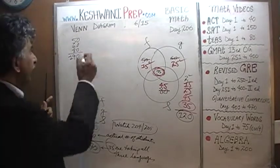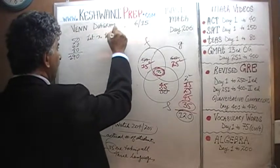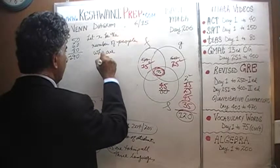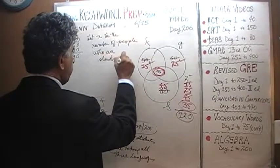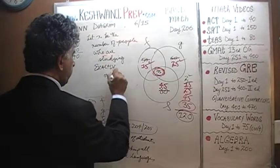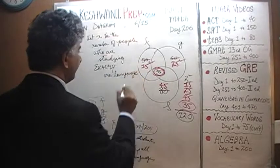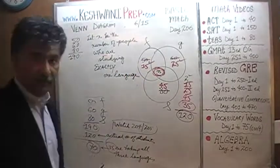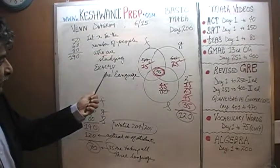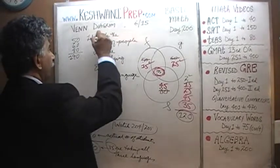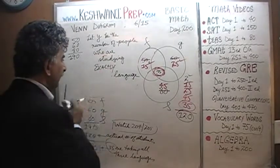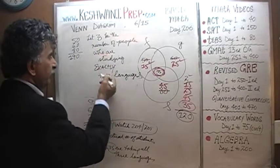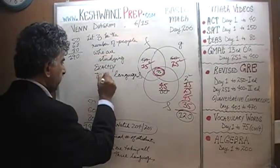We need to define our variables. Let x be the number of people studying exactly one language. Let y be the number of people studying exactly two languages. And let z be the number of people studying exactly three languages.